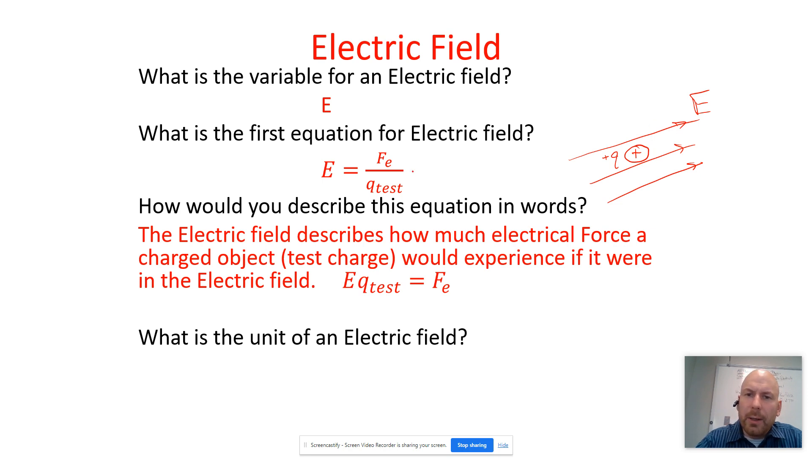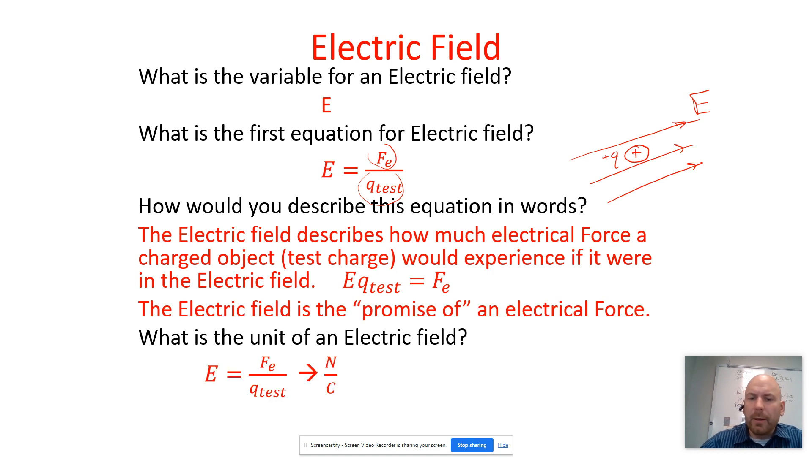So what it is, is the ratio of how much force in newtons over how much charge there is per one coulomb. So that gives us the unit of electric field: newtons per coulomb.